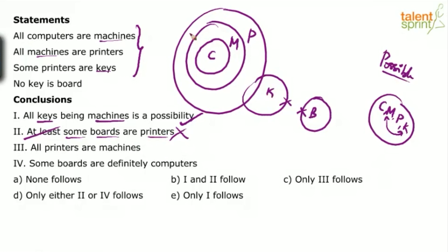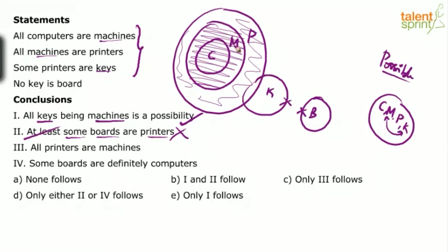Third conclusion: all printers are machines. When you look at the basic diagram itself, you find that not all printers are machines. The printers outside the machines circle are not machines — only the shaded region represents printers which are also machines. So all machines are printers does not mean all printers are machines. What's the definite conclusion for all machines are printers? Some printers are machines.